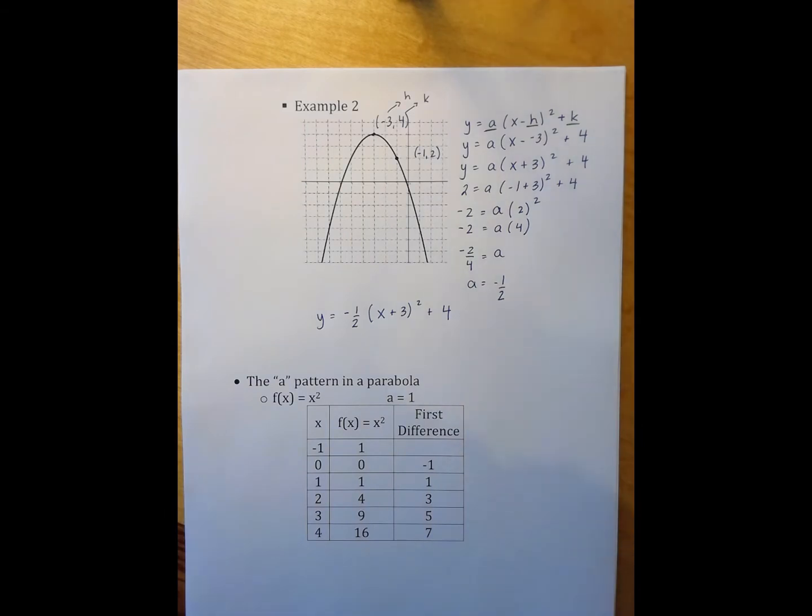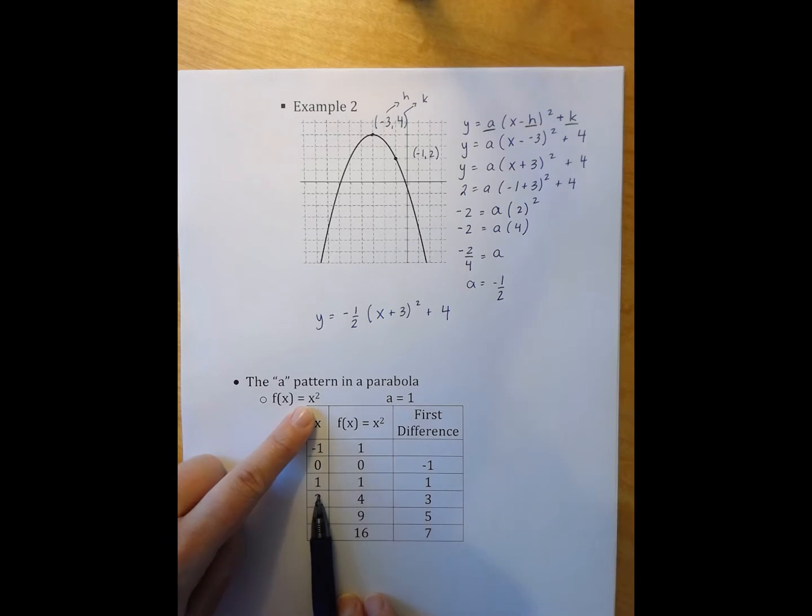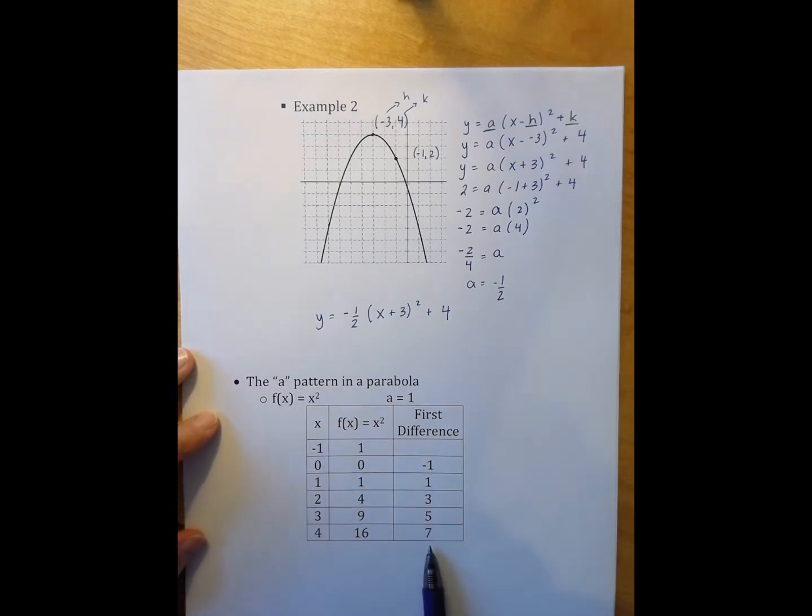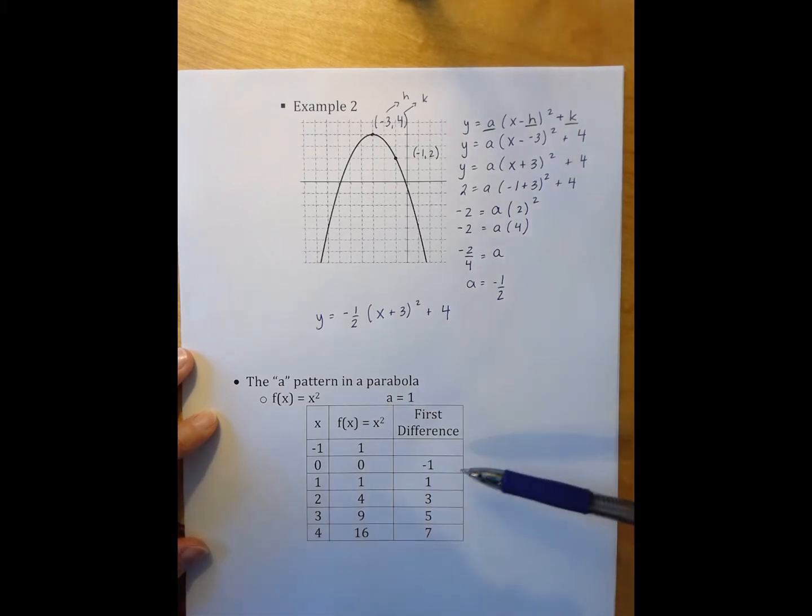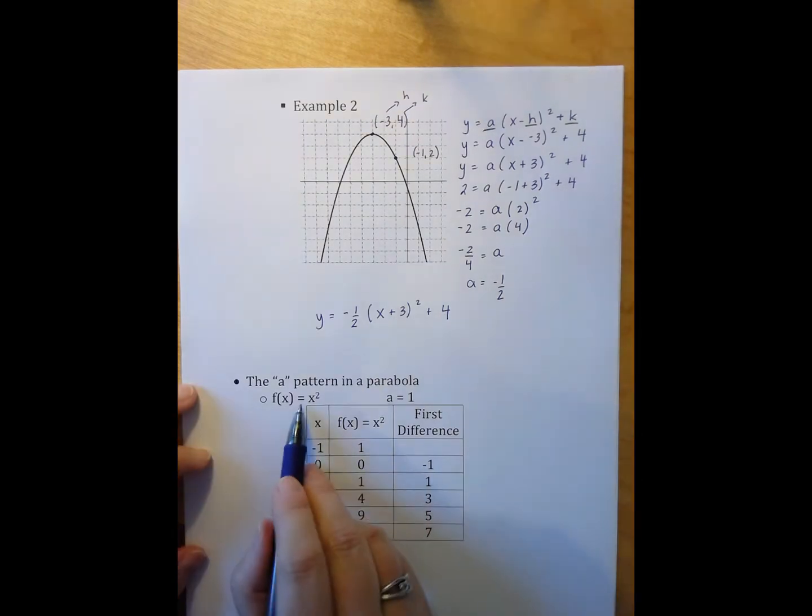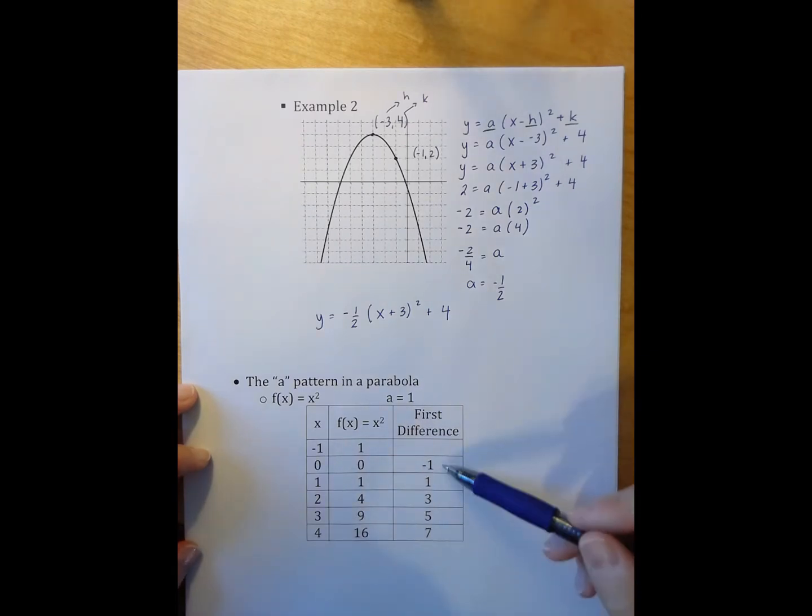Now, in the course of graphing parabolas and using table of values to do that, you might have noticed, hopefully you have noticed, a pattern with your first differences. So, when I look at the table for the function f of x equals x squared, my values for x being negative 1 to 4 are here. And then here are my first differences. And notice the pattern here is that I have negative 1, 1, 3, 5, 7, 9, 11, etc. So, we often talk about the a pattern when a is 1 as being these numbers, as being the odd numbers, basically.